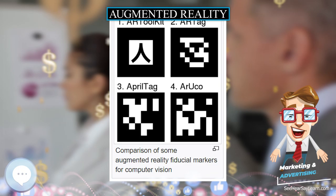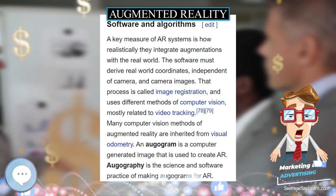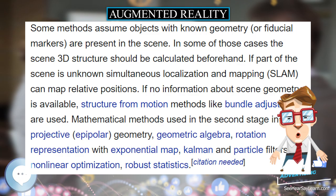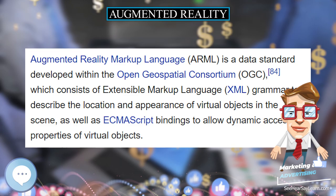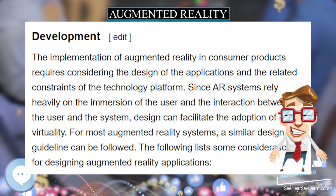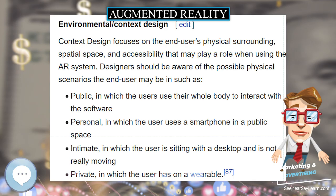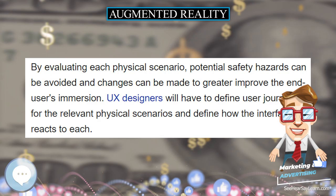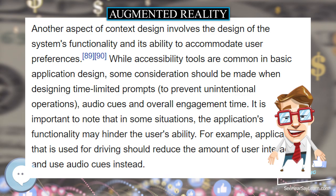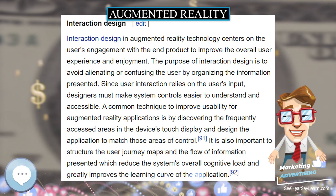A demonstration of how AR layers objects onto the real world can be seen with augmented reality games. Wallami is an augmented reality game application that allows users to hide messages in real environments utilizing geolocation technology, enabling users to hide messages wherever they wish in the world. Such applications have many uses including in activism and artistic expression. Hardware components for augmented reality are a processor, display, sensors, and input devices. Modern mobile computing devices like smartphones and tablet computers contain these elements, which often include a camera and microelectromechanical systems (MEMS) sensors such as an accelerometer, GPS, and solid-state compass, making them suitable AR platforms. There are two technologies used in augmented reality: diffractive waveguides and reflective waveguides.